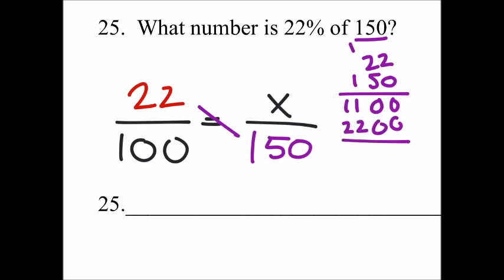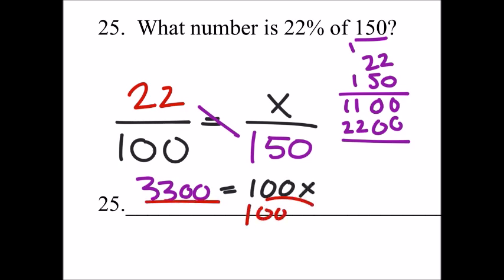So I got 3300. Equals 100x. Now when we divide both sides by 100, we just get rid of the zeros. So it looks like the number is 33.